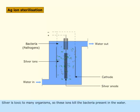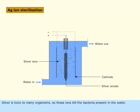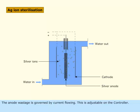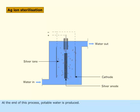Silver is toxic to many organisms, so these ions kill the bacteria present in the water. The anode wastage is governed by current flowing, which is adjustable on the controller. At the end of this process, potable water is produced.